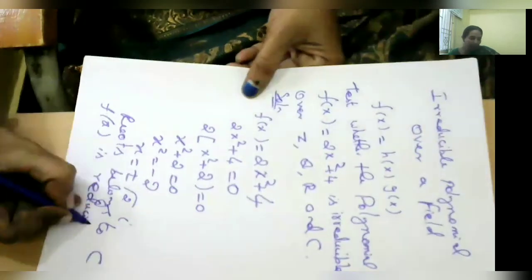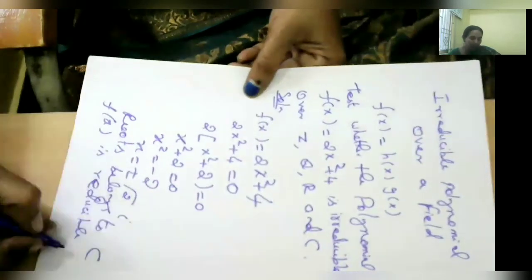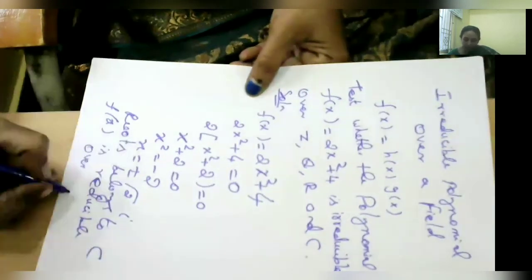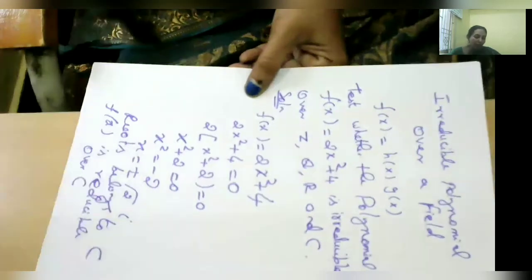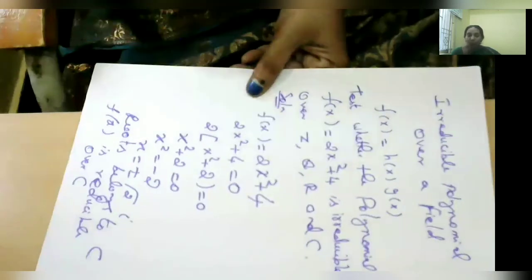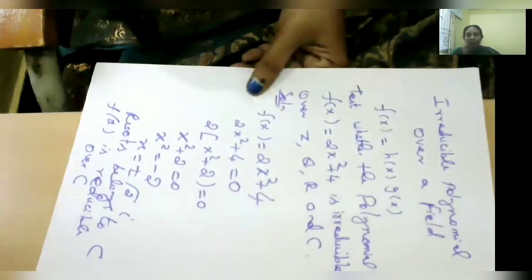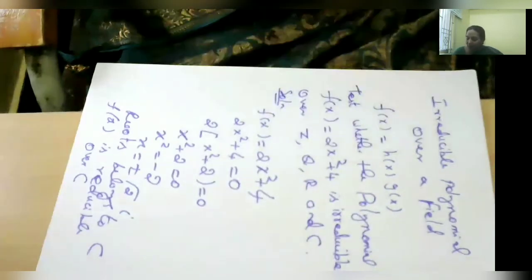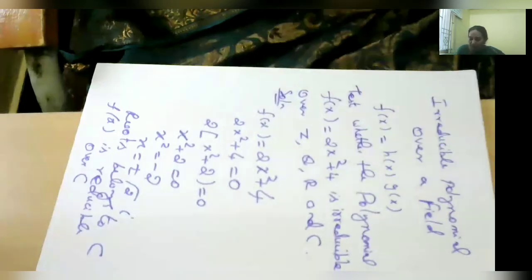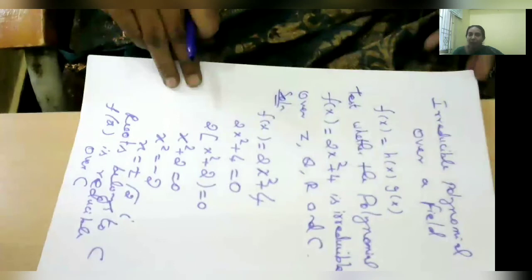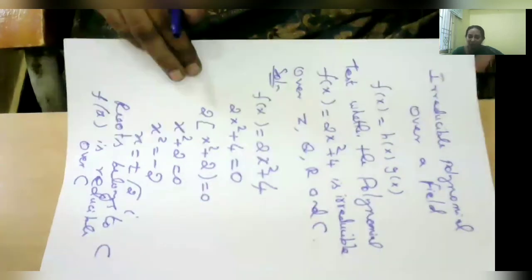Therefore, f(x) is reducible over C. But it is irreducible over Z, Q, and R. The given polynomial is not reducible over Z, Q, and R, but it is reducible over C. This is how we check whether a given polynomial is reducible or irreducible.